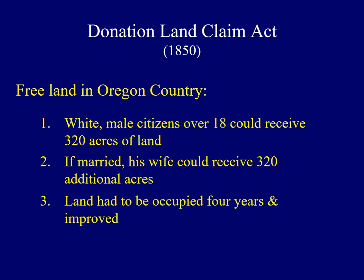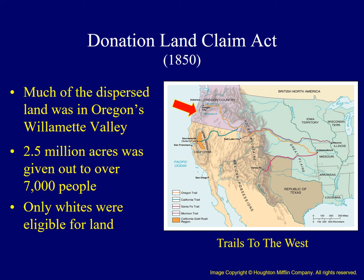Individuals who obtained the land were required to occupy it for a minimum of four years and improve it. Improvements could include clearing trees, planting crops, building a home, or other actions. Over the next five years, about two and a half million acres of land were doled out under this legislation. However, participation was limited to whites — free blacks and native Hawaiians were excluded. There was a small but significant Hawaiian population, which had been in place since the fur trading era, who were ineligible for this free land.